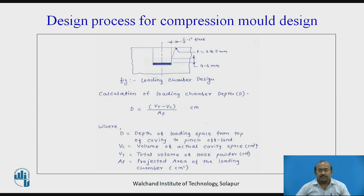Loading chamber design — calculation of loading chamber depth: Vt minus Vc upon Ap, in centimeters. The depth of loading space is from the top of the cavity to the punch land. Vc stands for volume of the actual cavity space in cubic centimeters. Vt stands for total volume of the loose powder in cubic centimeters. Ap stands for projected area of the loading chamber in square centimeters.